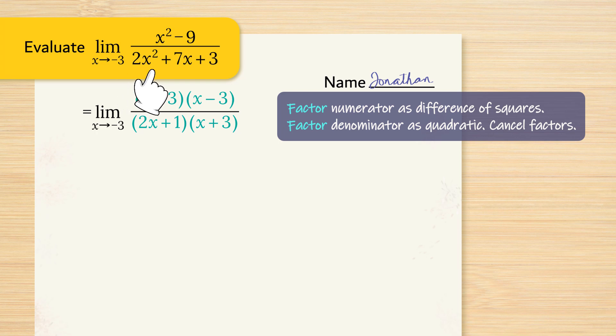So we have to take that into account in order to get the 7 for 7x. The factored form of the denominator is 2x plus 1 multiplied by x plus 3.